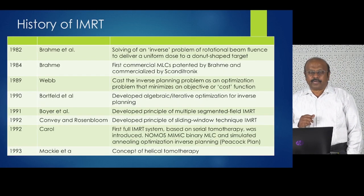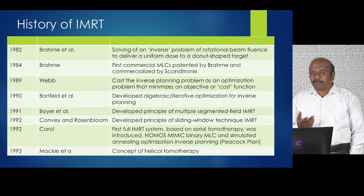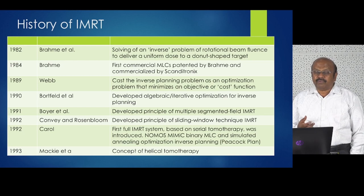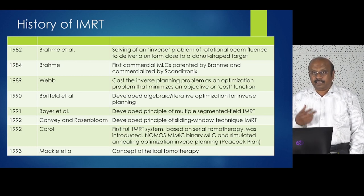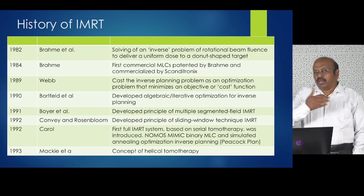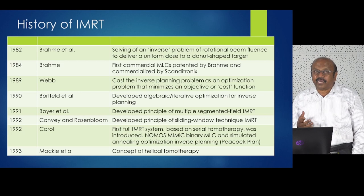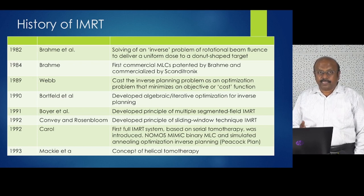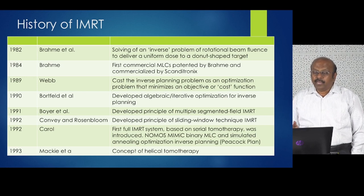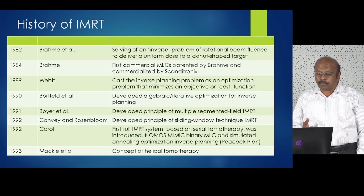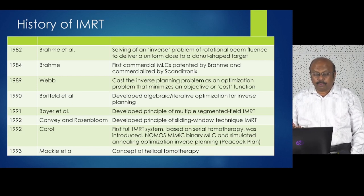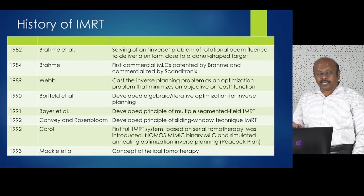Going a little into the history of IMRT: it started with the concept that Brahme gave in 1982, where he solved an inverse problem of rotational beam performance to deliver a uniform dose to a donut-shaped target. Brahme first commercialized an MLC and patented it, coming up with an MLC concept in 1984. In 1989 Dr. Webb formulated inverse planning as an optimization problem that minimizes a cost function. Then Bortfeld came up with an algebraic iterative optimization problem, and Rock Mackie came up with helical tomotherapy in 1993.